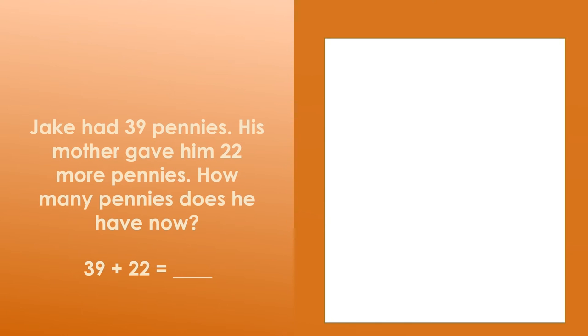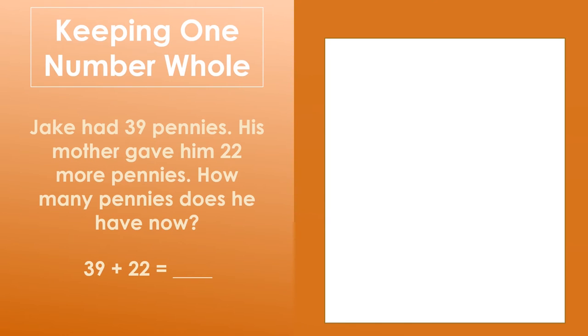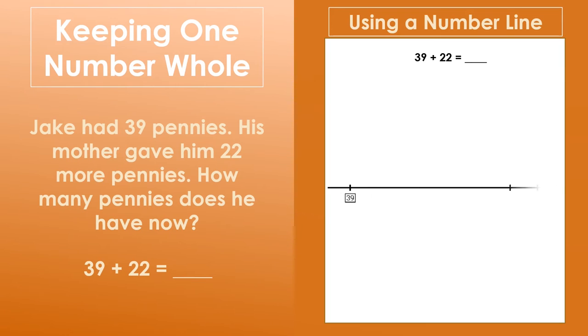To solve this problem, we are going to use a strategy called keeping one number whole. One way we can model our thinking is to use a number line. You can see that we are going to start our number line at the number 39, which is the first addend in our equation.